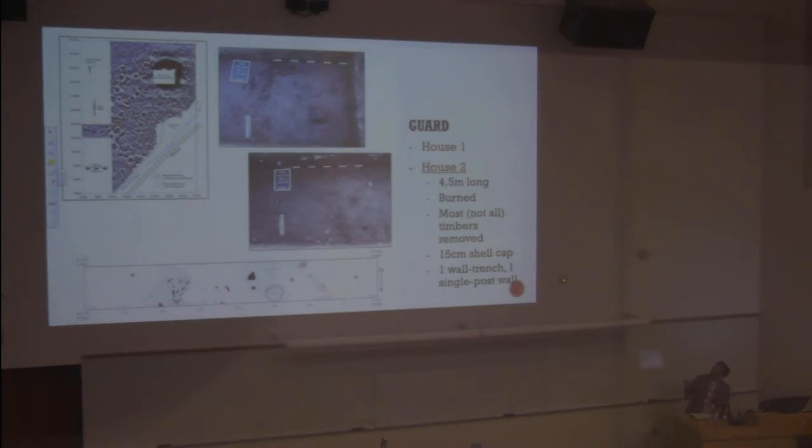House 2, up in the north here, was 4.5 meters long. It, too, had been burned. This had been capped with a 10- to 15-centimeter thick layer of shell. Very confusing. The west wall was wall trench, Mississippian style, while the east wall was single-post. So we've got two competing styles of architecture here, a local style and a non-local style.